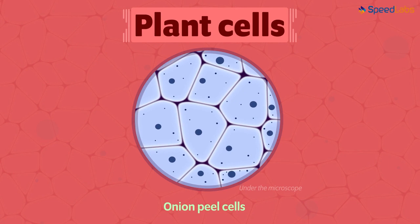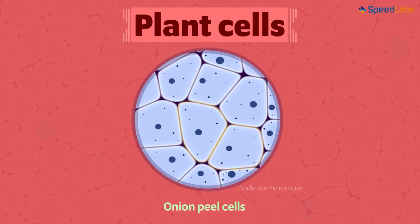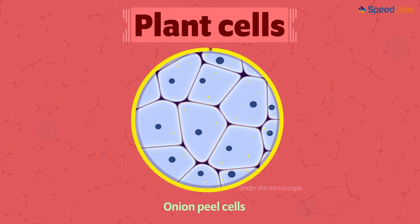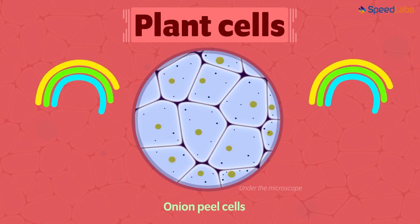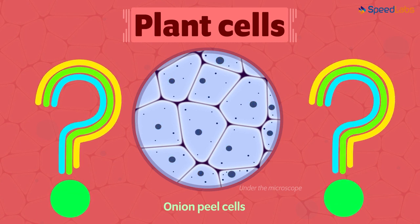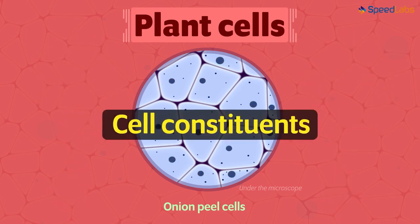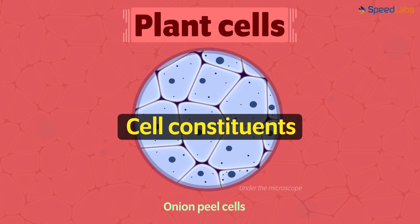Roughly, we have seen these thick distinct borders that differentiate each cell from the other one. Then we have these tiny dark spots scattered all over. Also, we can spot this prominent circular structure here which is very darkly stained. Any idea what these things are? Well, these are the cell constituents. Let's get introduced to each.